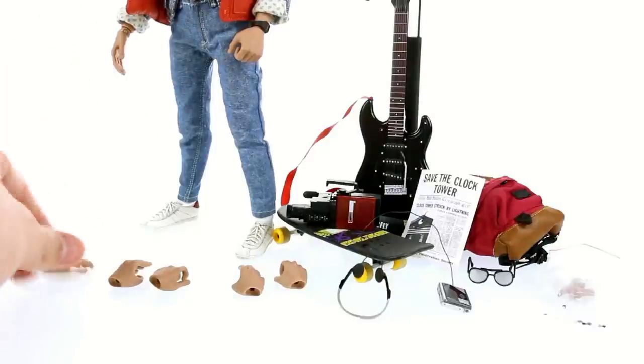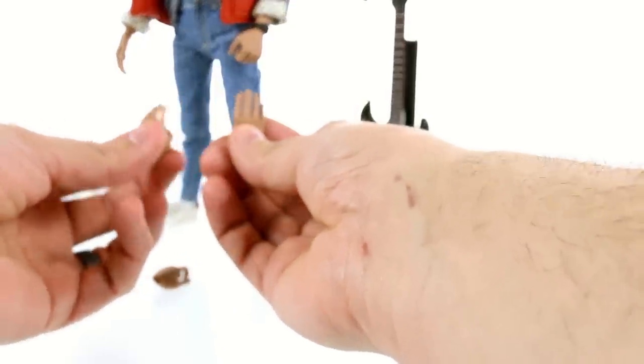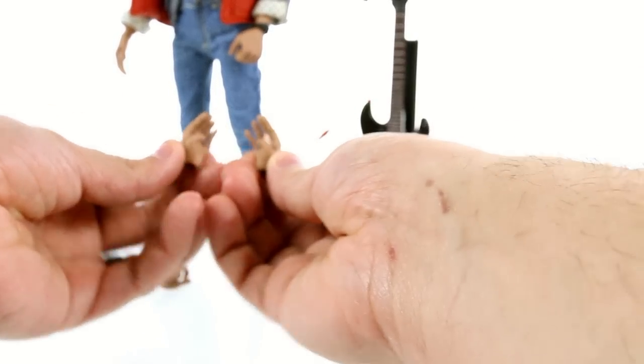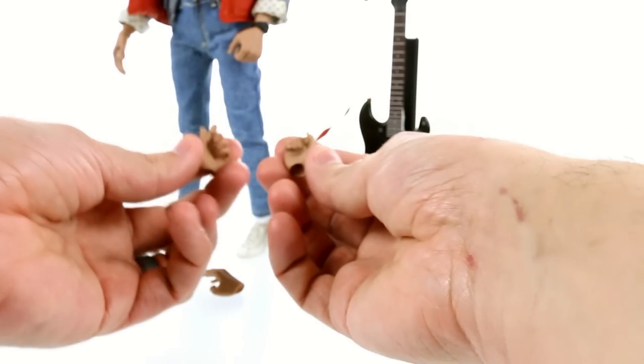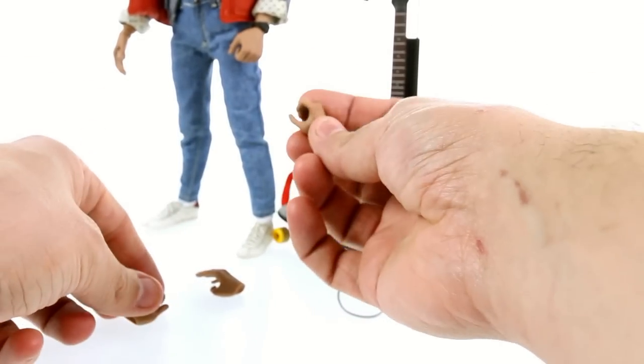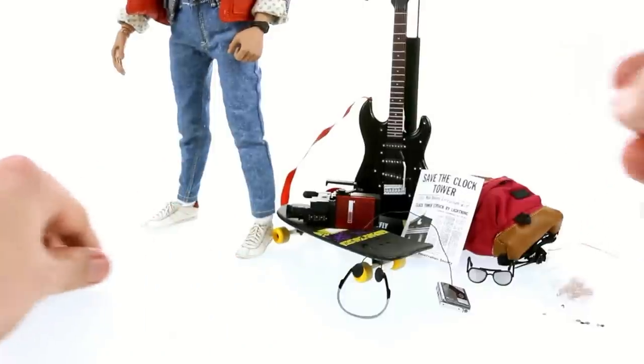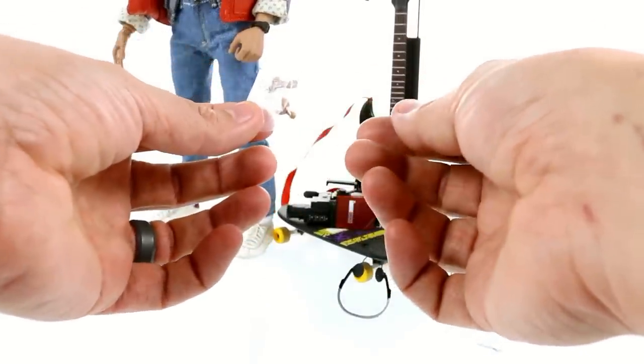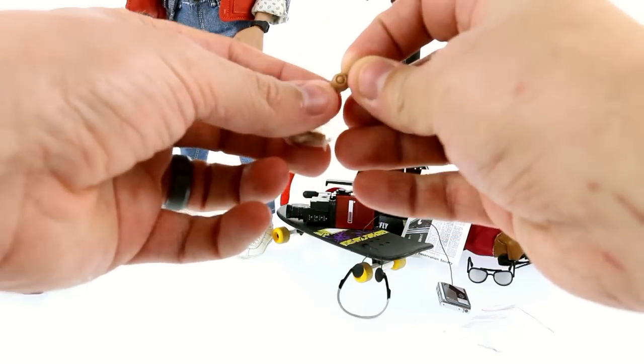He comes with a right relaxed hand. He comes with two different hands here that are basically in the same configuration. What they're used for is kind of strange, but I think it's more designed to actually hold a skateboard. So you do have a right and left hand that's for that. And then you do have a right and left hand that are kind of in a fist. This one is a little bit more designed to probably hold the guitar, whereas this is more similar to the hand that's already on there. So you do have several hands there.